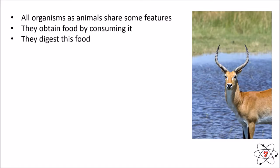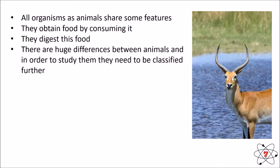All animals digest their food through a digestive system. This is very different from plants, who do not need to digest their food because they are producing it. All they need to do is turn that glucose they produce into energy through respiration. All animals need to digest their food, but there are huge differences between different animals, and in order to effectively study them we need to classify them and put them into groups.